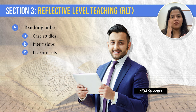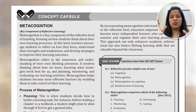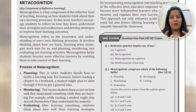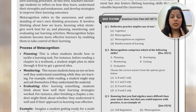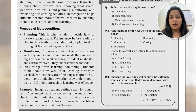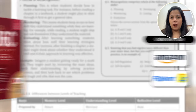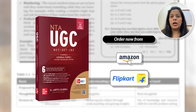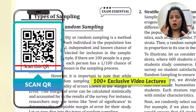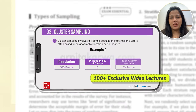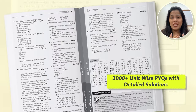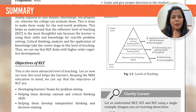Apart from all the topics we have discussed today, there are some other important ones like metacognition. Metacognition is a topic which is connected to the reflective level, and this topic frequently appears in UGC NET Paper 1. Make sure that you study what metacognition is before you sit for the exam.